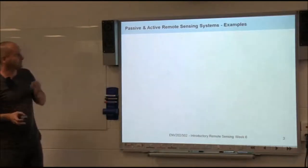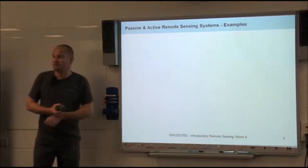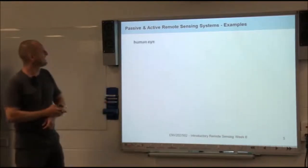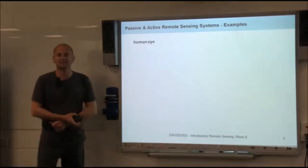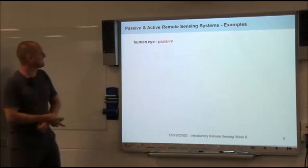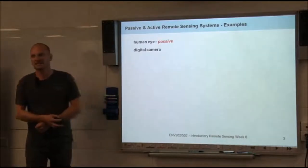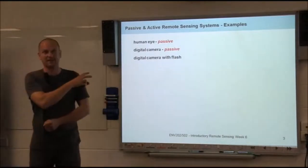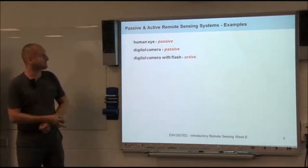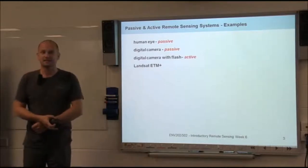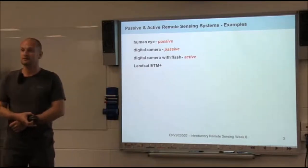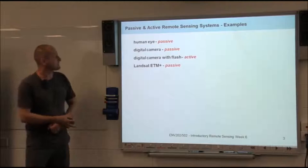Alright, so you ready to go through some examples? Human eye—active or passive? Passive. Digital camera? Passive, exactly. With a flash? That's active. Landsat ETM? Passive. That's a passive sensor, exactly.